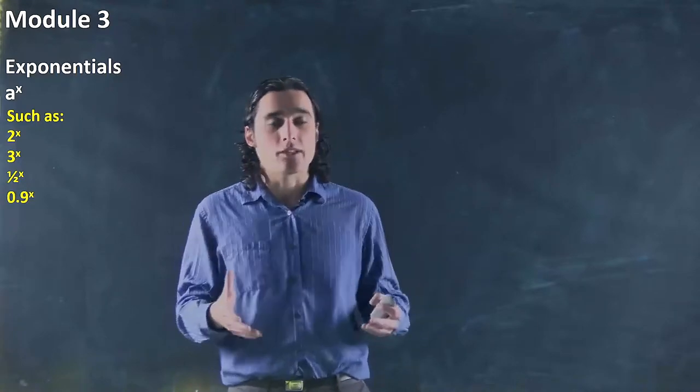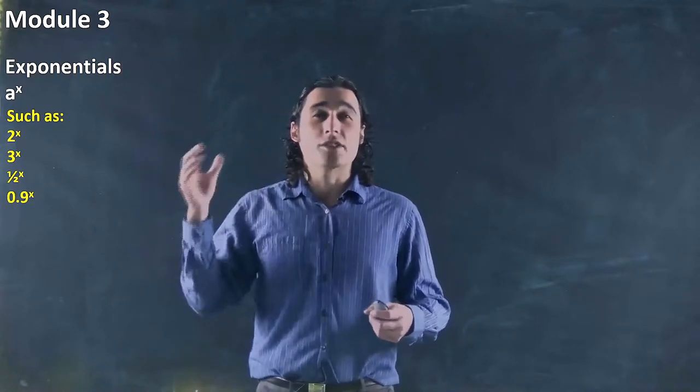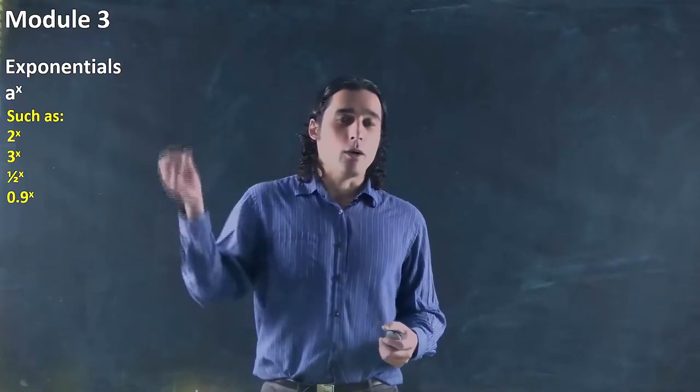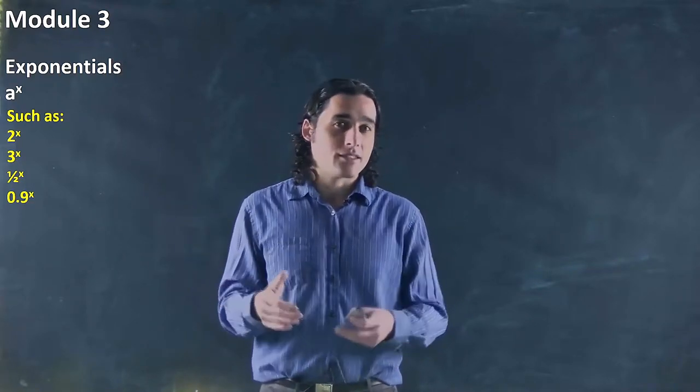Basically, x is our variable, as always. Might not be x, it could be y, but it's our variable. And our variable is the exponent in this case. What we have, a, is the base. It's just a number.